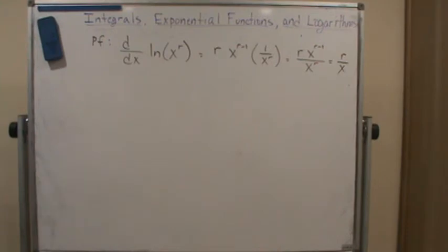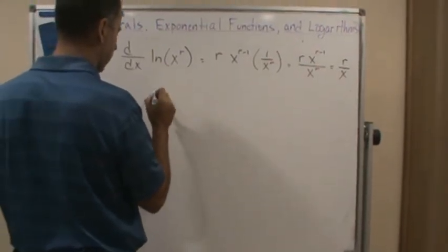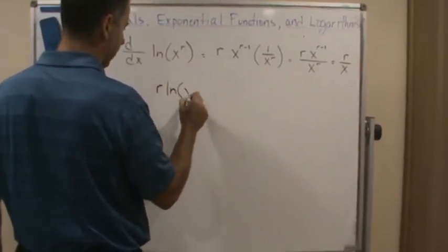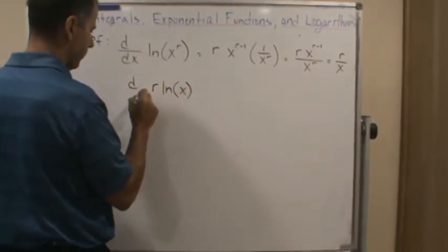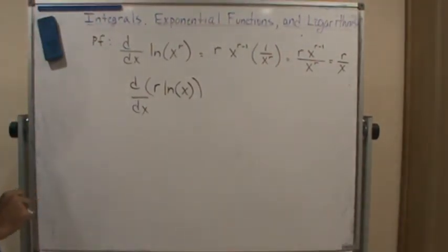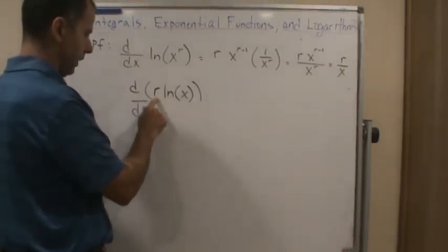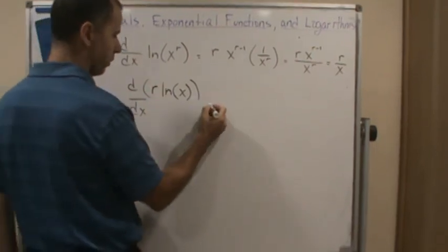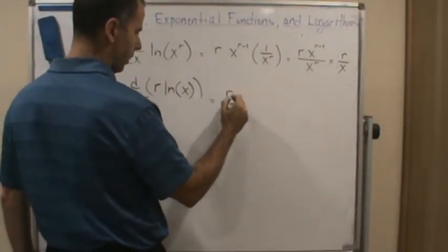Notice that result: the derivative of ln(x^r) is r/x. Now let's take the derivative of r times the natural log of x with respect to x. Here r is just a constant, so we pull it out of the derivative. The derivative of the natural log of x is 1/x, so this becomes r over x as well.